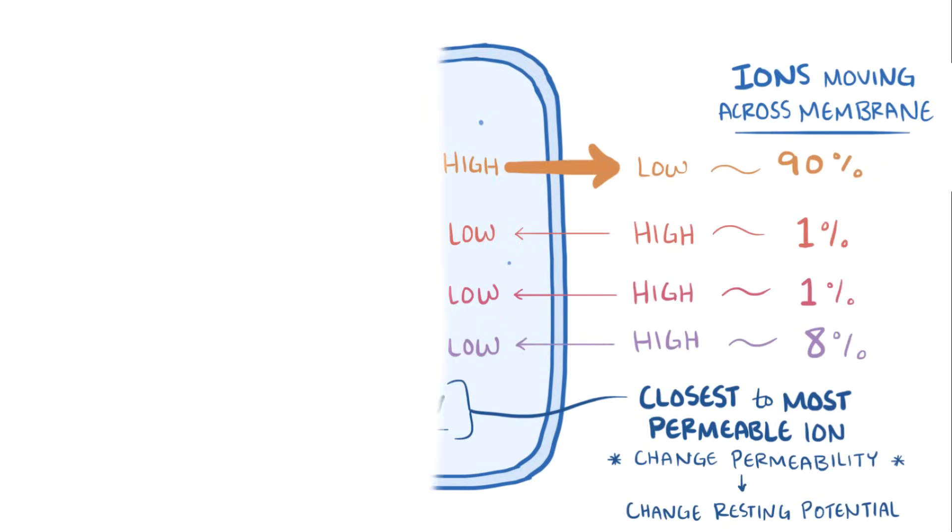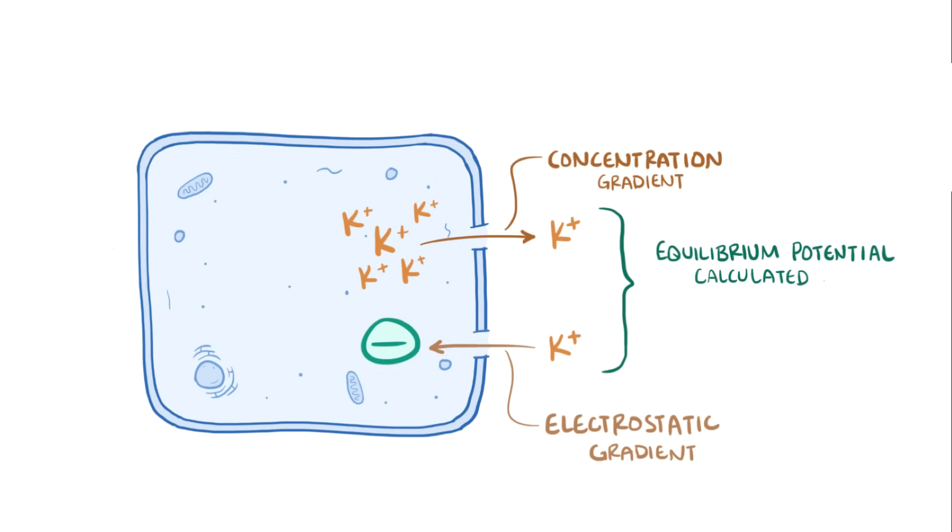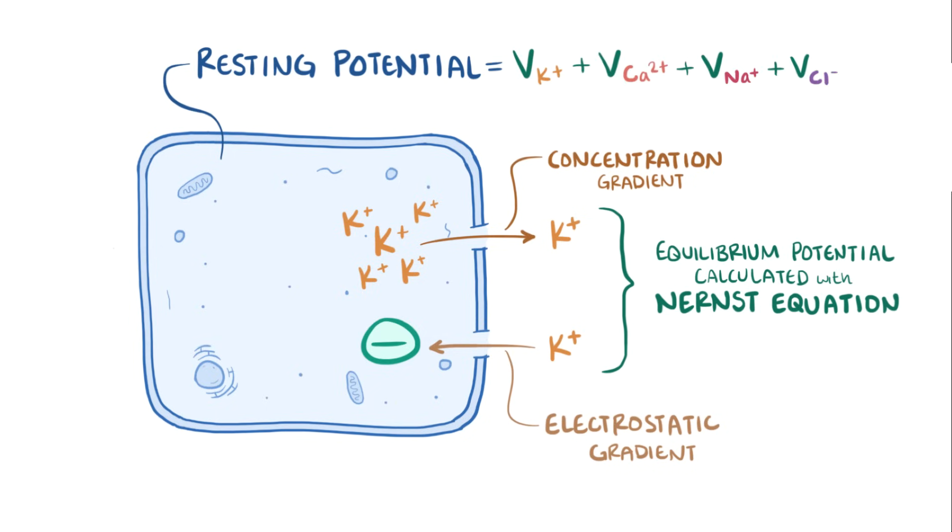Okay, as a quick recap, an ion's equilibrium potential is the point where its concentration gradient equals its electrostatic gradient, and can be calculated using the Nernst equation. The cell's resting membrane potential is therefore a summation of each individual ion's equilibrium potential, depending on each ion's relative permeability.